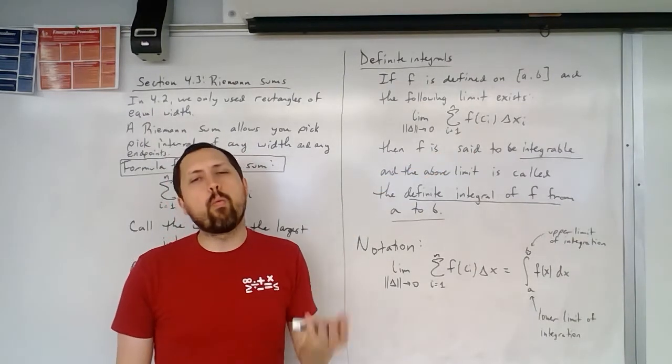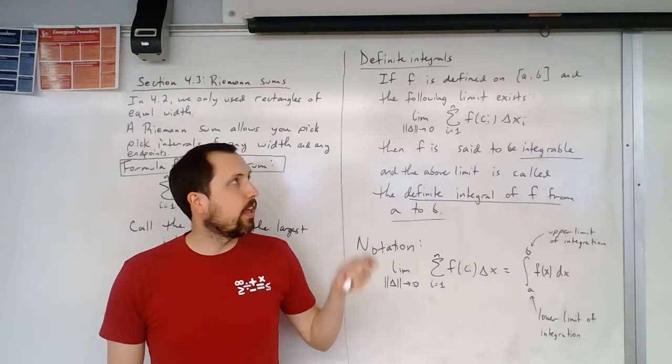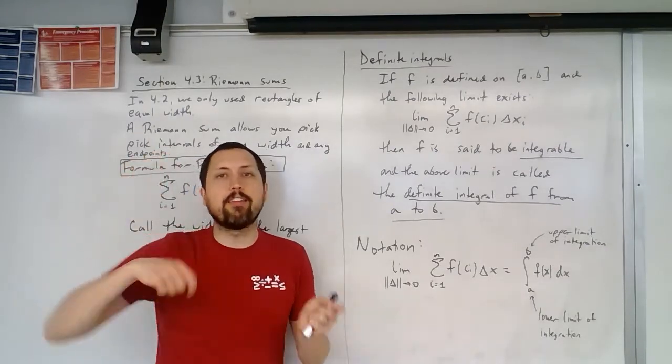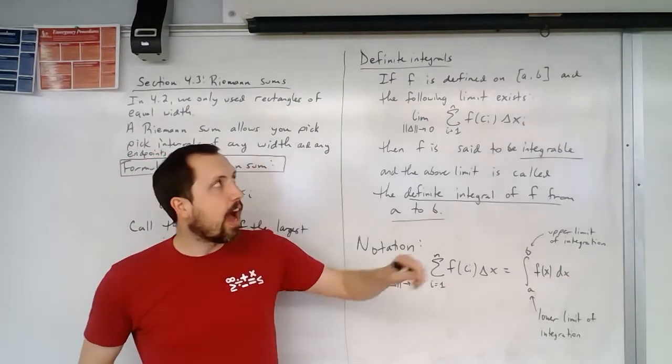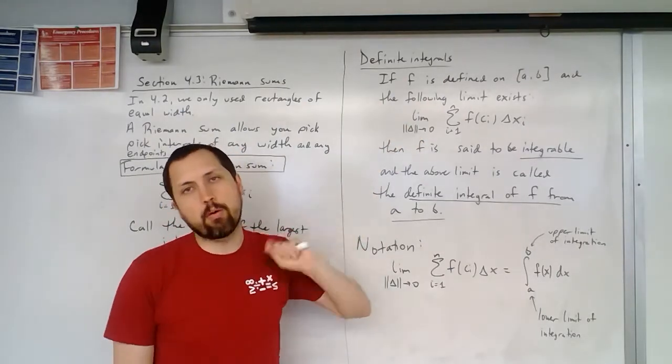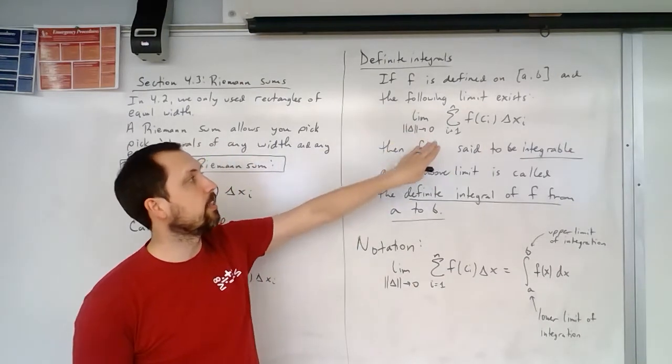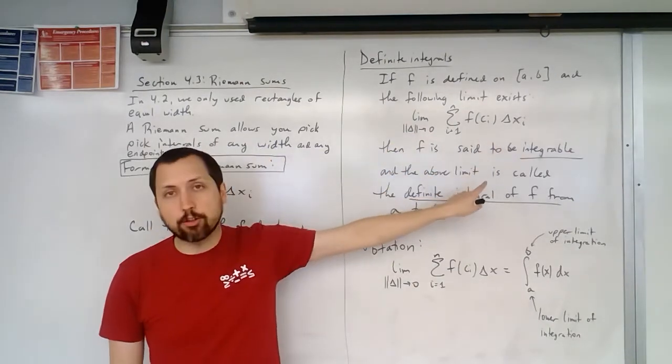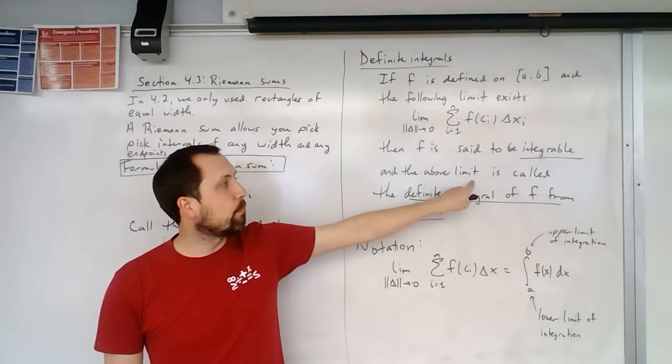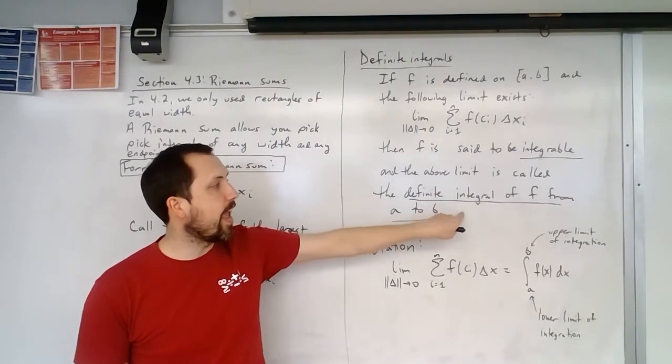Now if you're thinking about when wouldn't the area be well defined? Well, if you had some type of weird jump discontinuity with an infinite discontinuity in things, I could make it so the function's still defined on that interval, but the limit won't exist. So we're not going to be looking at those cases. We're going to be saying this limit exists. Then we say F is going to be integrable. So F is an integrable function. And this above limit is called the definite integral of F from A to B.